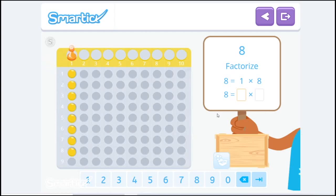Okay, let's try. So let's try to divide 8 between 2. Alright, great. So we do have 4 times 2 equals 8. So there are another set of factors.